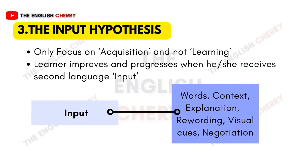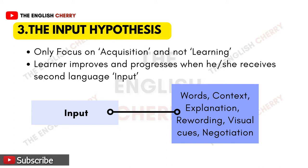Then comes the input hypothesis. This involves learning that follows a gradual advancement step by step, focusing only on acquisition and not on learning — so there is no part of grammar rules here. According to this hypothesis, the learner improves and progresses when they receive second language input, with the advanced level of learning introduced gradually, keeping in mind their linguistic competence. The input is related to word choice, presentation of context, explanation, rewording, reintroducing parts, using visual cues, and making negotiations. Using all these tools, the learner's level is advanced from knowing nothing to knowing everything — from basic to advanced.